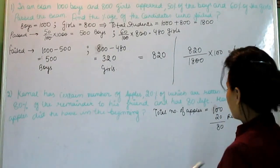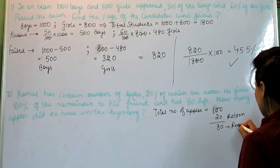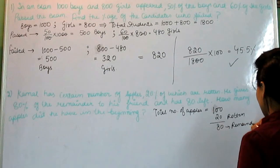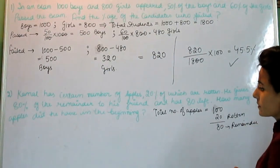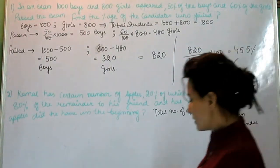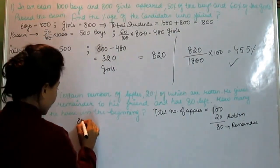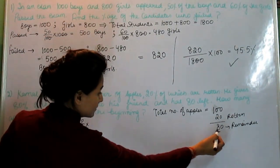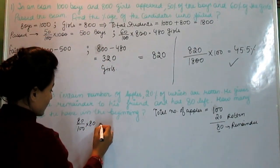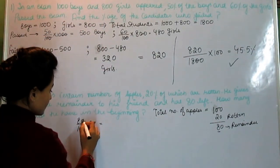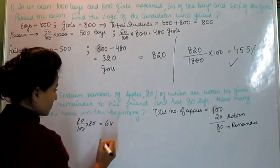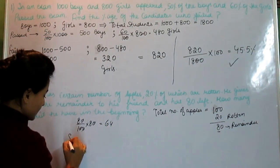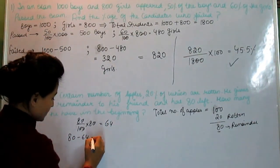He gives 80% of the remainder. This is remainder. He gives 80% of the remainder, I am solving here 80% of the remainder, that is 64. 80 minus 64 is equal to 16.